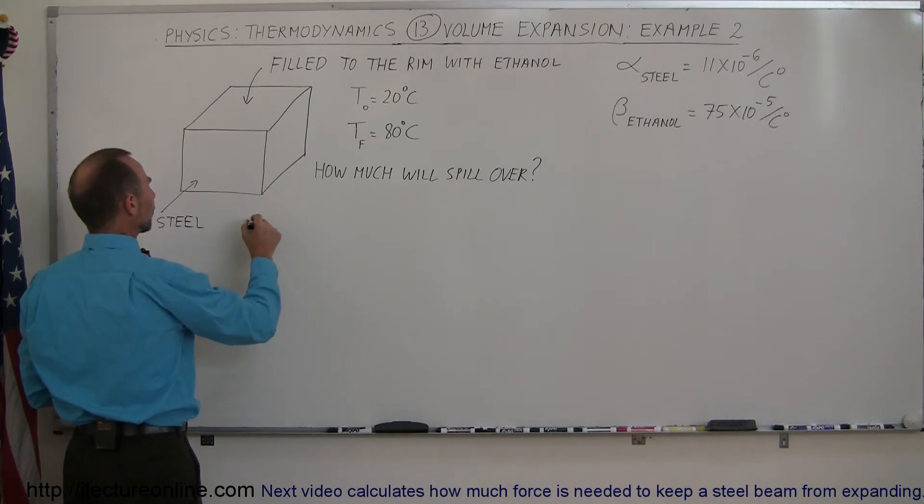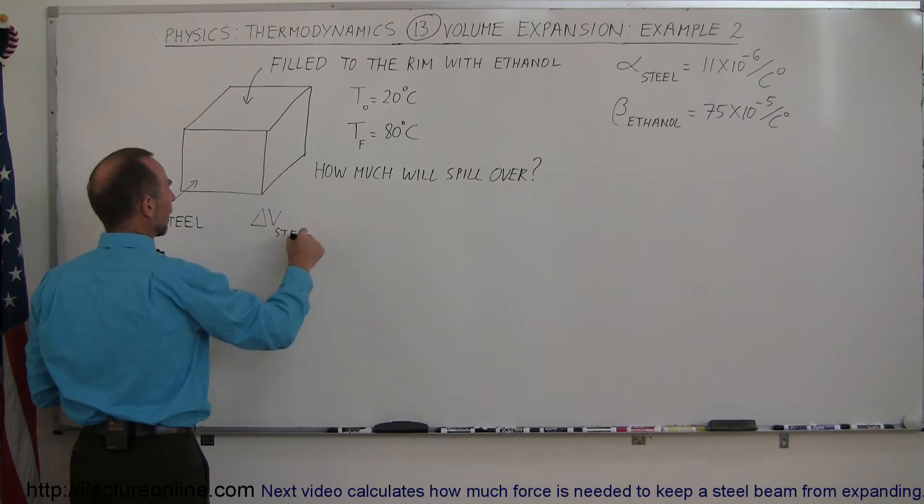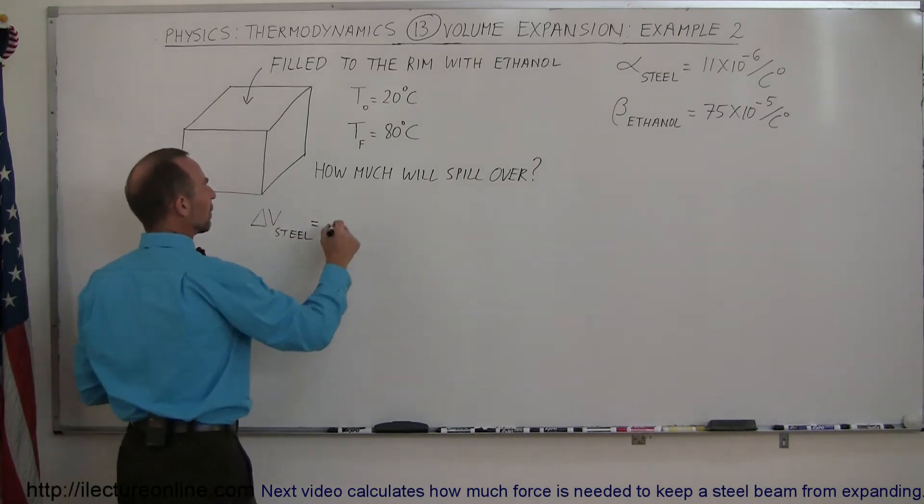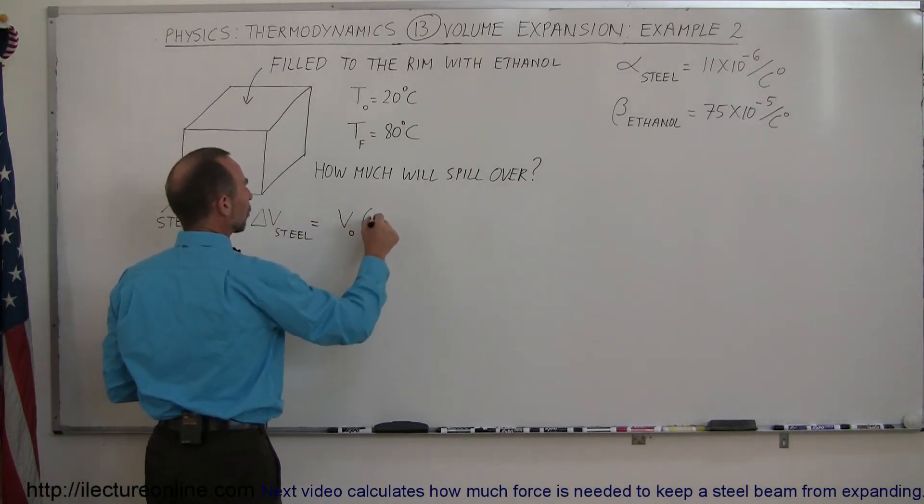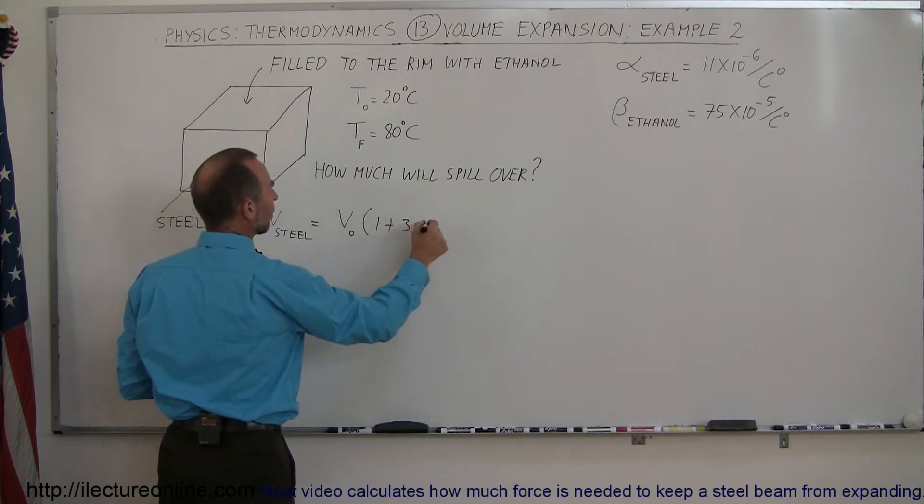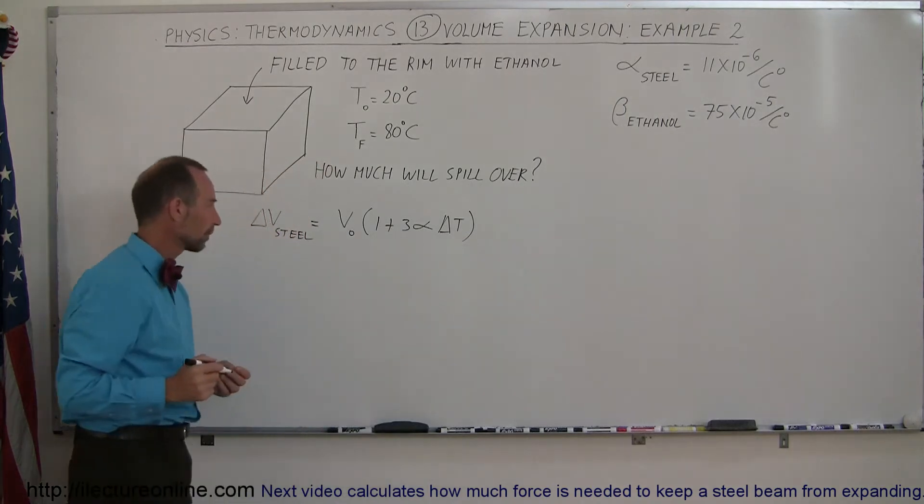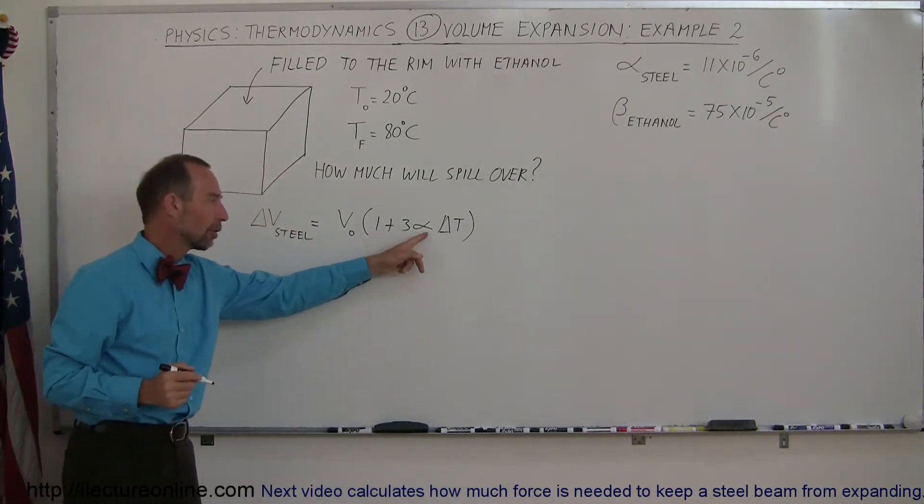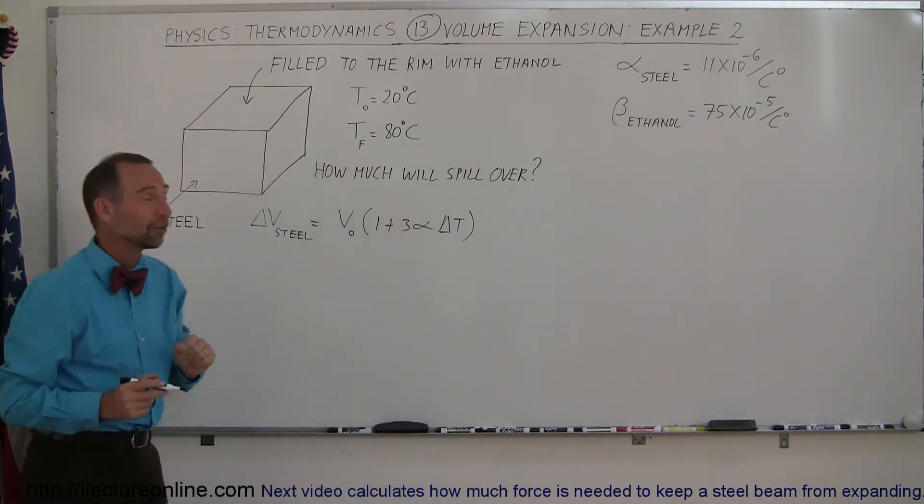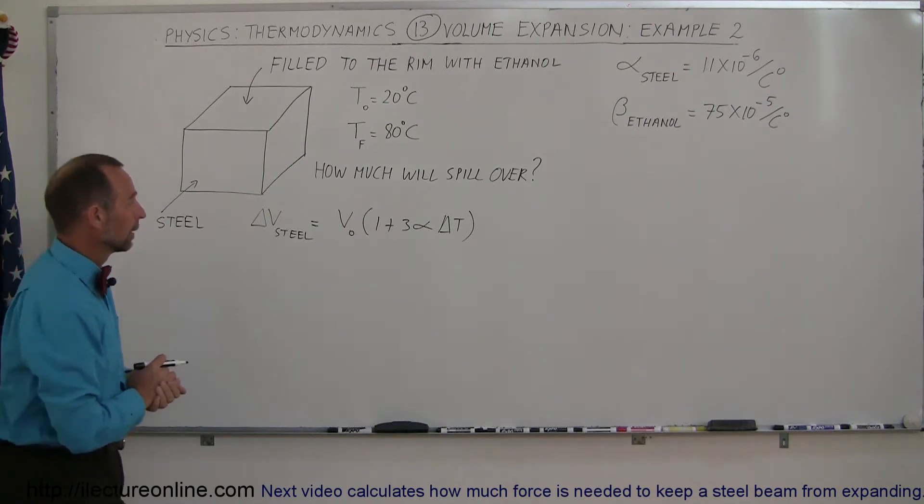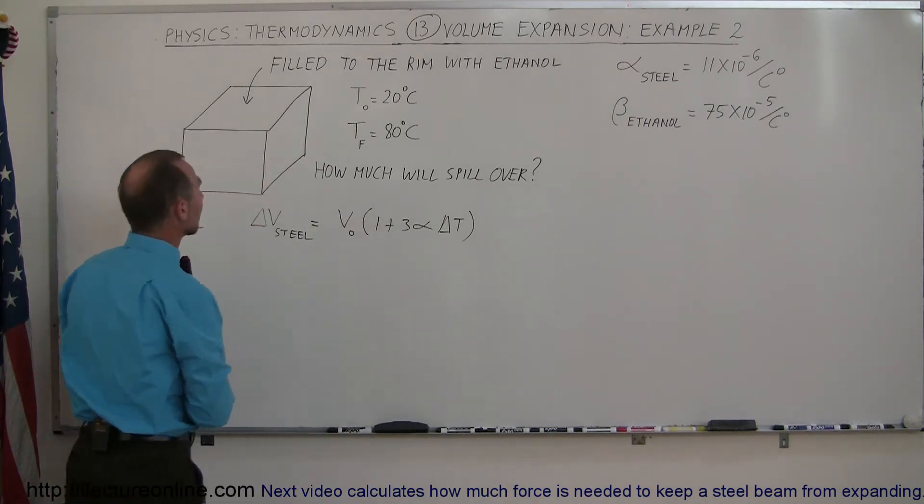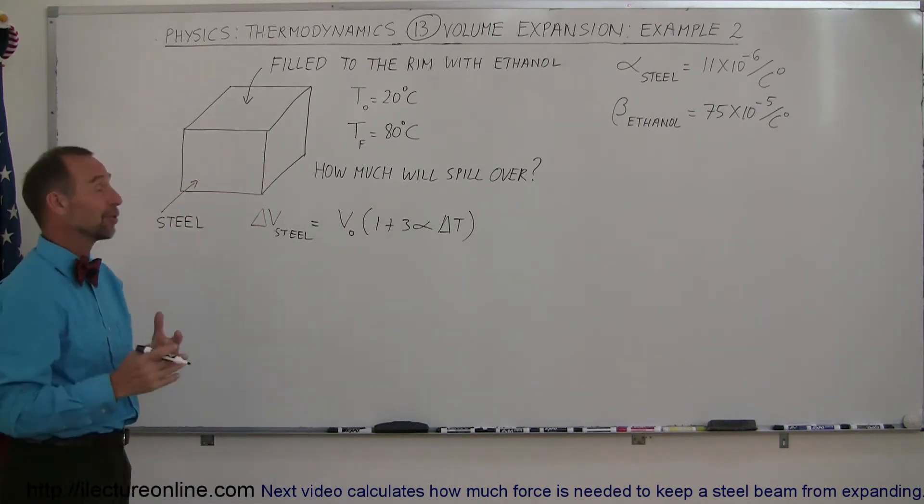So what we're going to do first is find the change in the volume for the steel. And the change in the volume would, of course, be the original volume times 1 plus 3 times the linear coefficient of expansion times the change in the temperature. And of course this would be the coefficient of linear expansion of steel, which I have over there in the corner. The original volume, now it would help if I gave you the original volume.